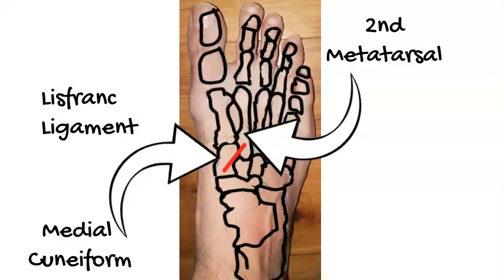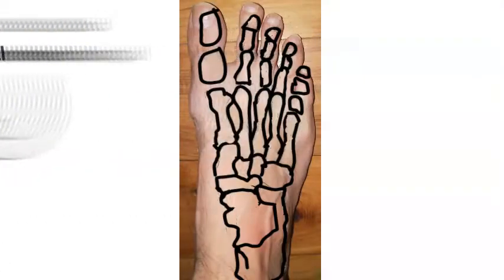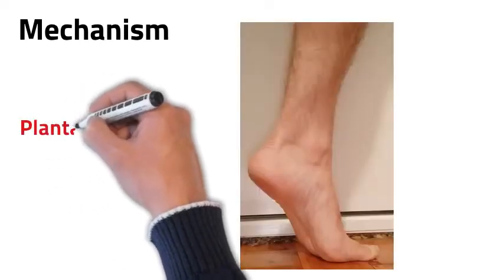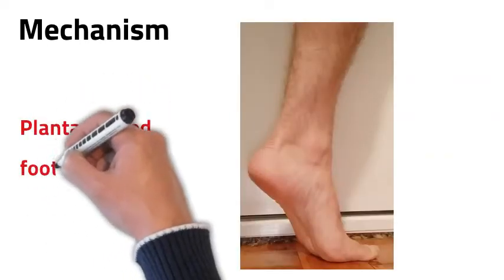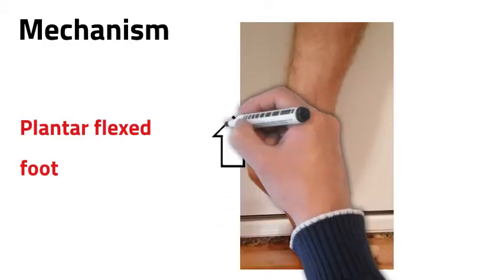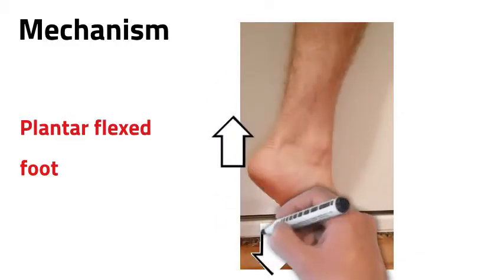Now if you're doing a Lisfranc injury, that's the area where you're going to be sore, where that area in red is. The mechanism of how you do this injury is what's called a plantar flexed foot, which is the position you've got in the picture there where your heel is pointing upwards and your toes are pointing downwards.